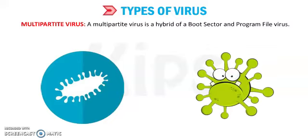Program viruses infect executable program files which have extensions such as .com, .ovr, and others. Whenever the user starts an application and runs the infected file, the virus is unleashed.